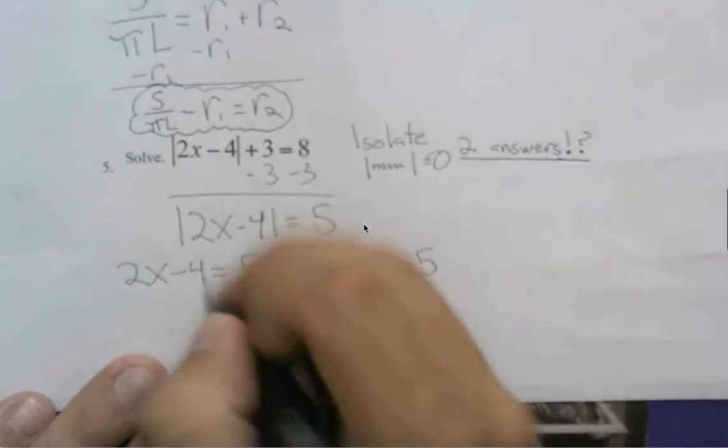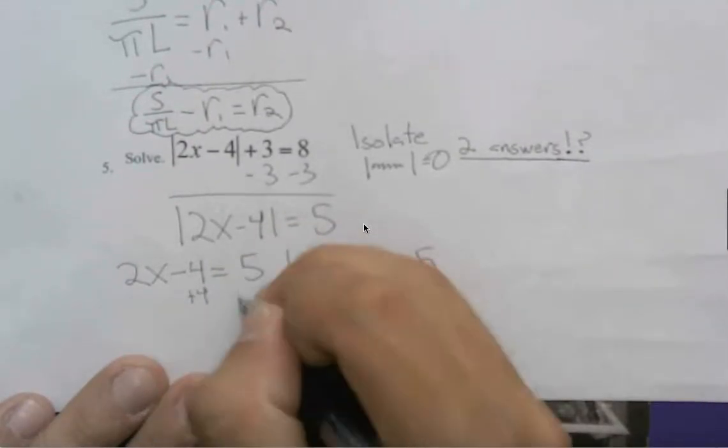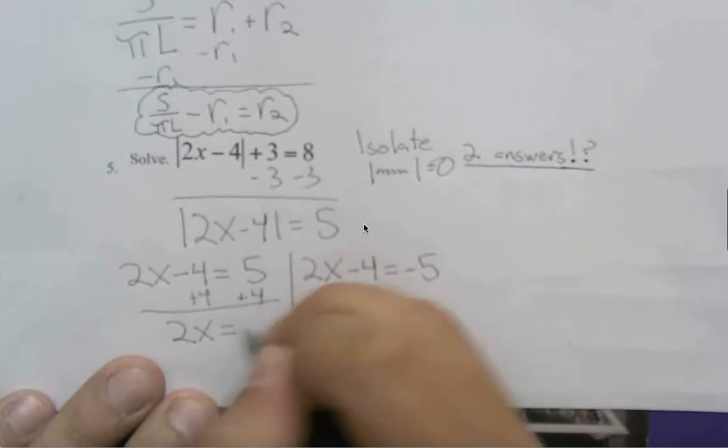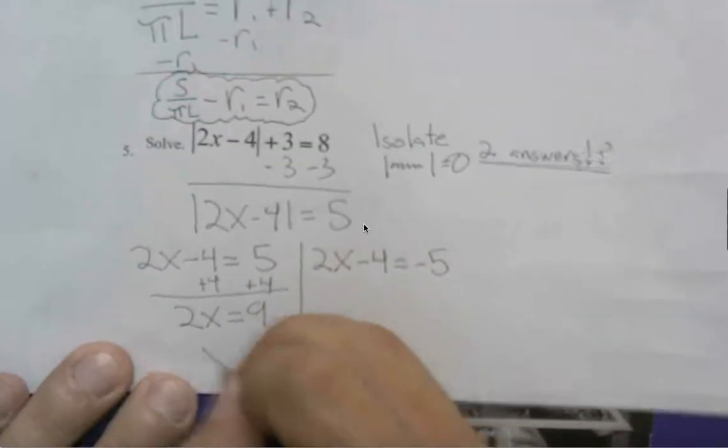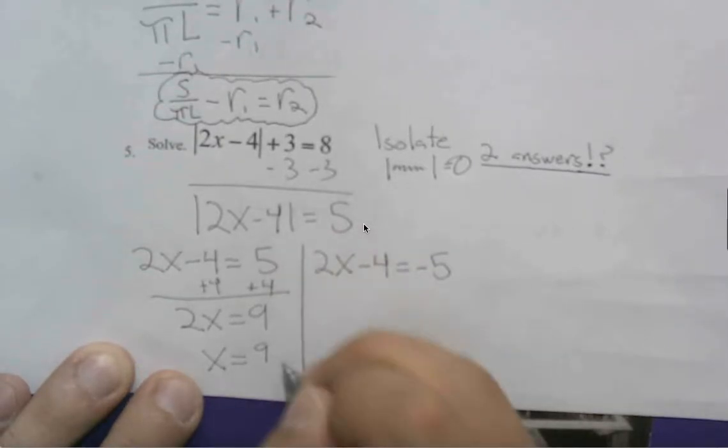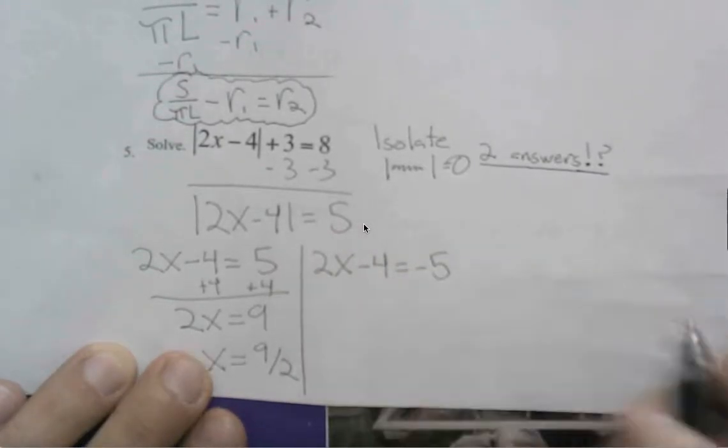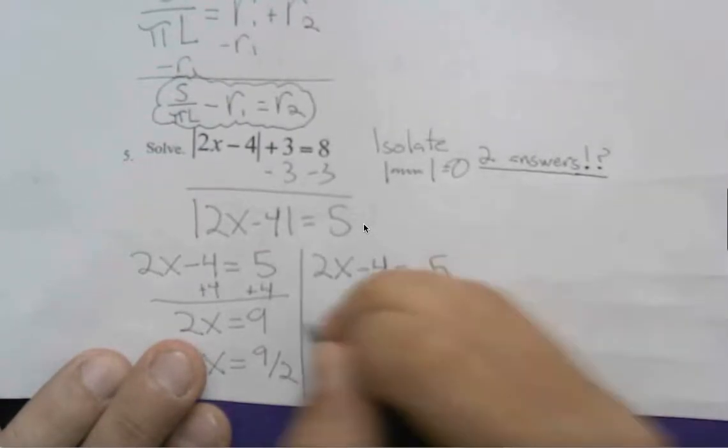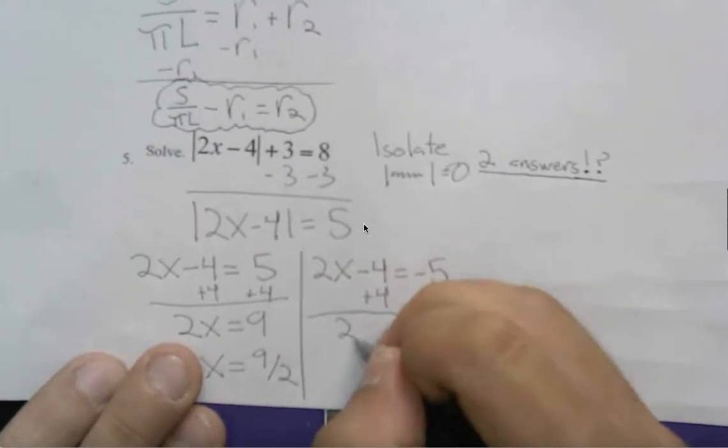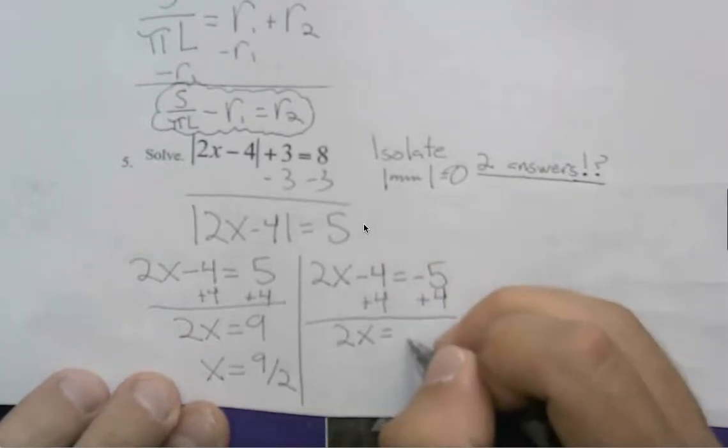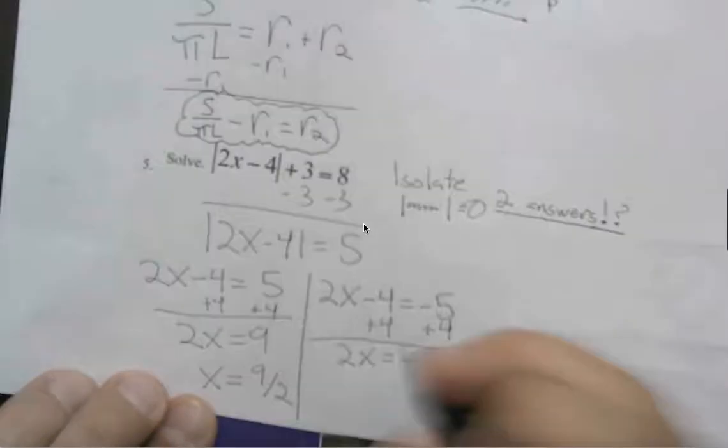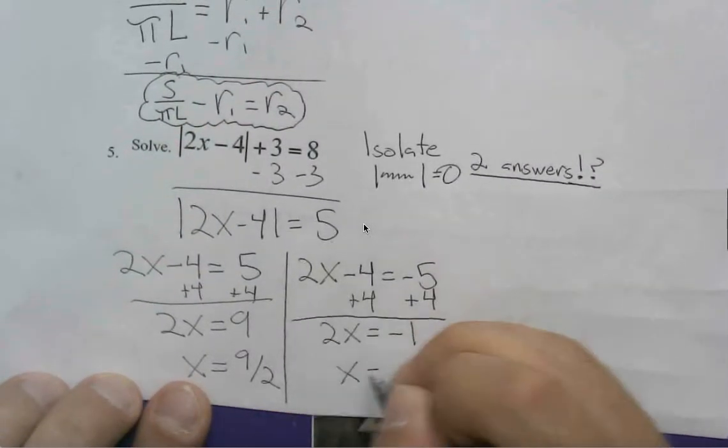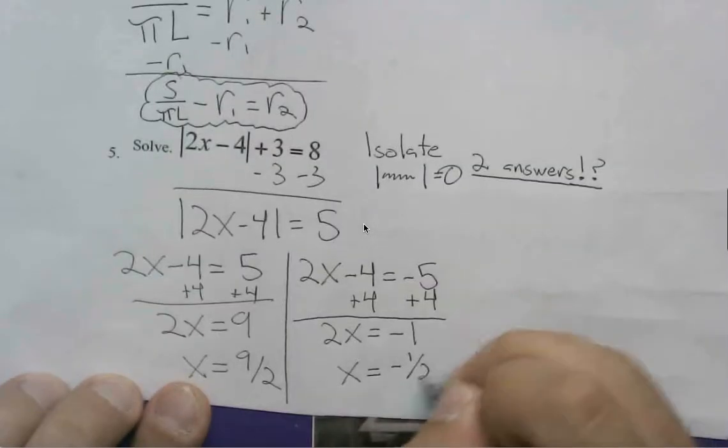So if we solve these, adding 4, adding 4, 2x now equals 9. So x equals 9 halves is one of our answers. We solve for the other side. We have 2x equals negative 5 plus 4, so negative 1. Dividing both sides by 2 gets us x equals negative 1 half.